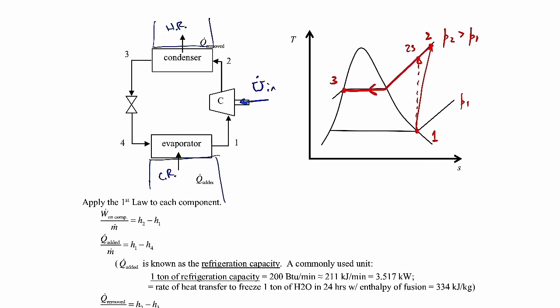From state three, we move through the throttling valve to state four. That is inherently a non-isentropic process, so we end up at a higher entropy for state four. The throttling valve results in a very abrupt expansion of the working fluid — an abrupt expansion is inherently irreversible, which is why we go to a higher specific entropy. Then through the evaporator from state four back to state one, that occurs at constant pressure, and we repeat the cycle.